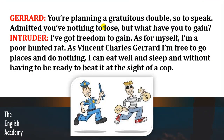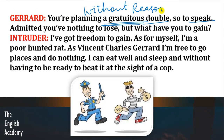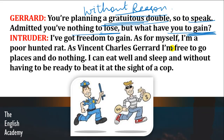Gerard says: 'You are planning a gratuitous double, so to speak.' Gratuitous means to do something without reason — bina kisi karan ke. Gerard kehta hai — achcha, tumhare paas koi reason nahi hai mujhe maarne ka, lekin tumhe mujhe maarne mein koi problem bhi nahi, kyunki already tumne ek khoon kiya hua hai jiski saza hogi ke woh tumhe hang till death kar denge. Agar ek aur murder bhi karo toh bhi same saza. 'Admit it, you have nothing to lose, but what have you to gain?' Intruder says: 'I have got freedom to gain.'